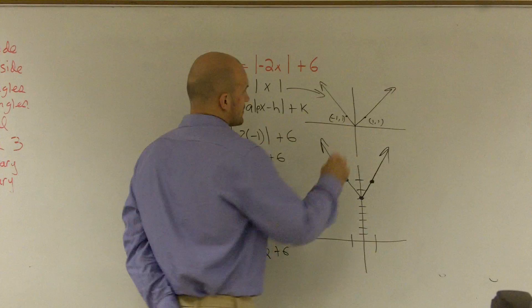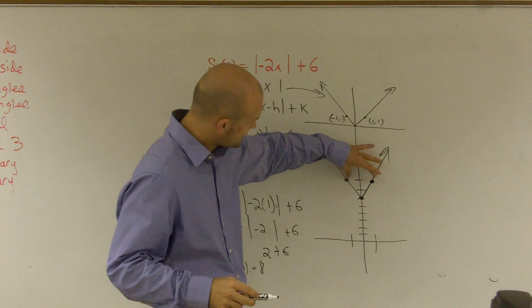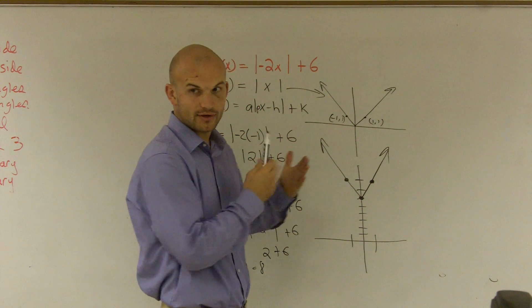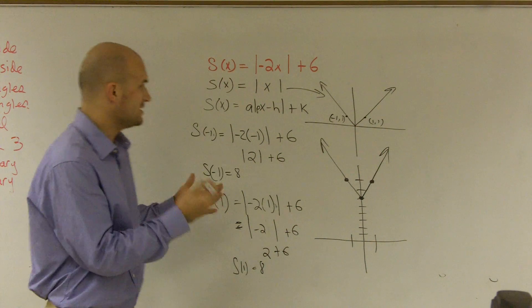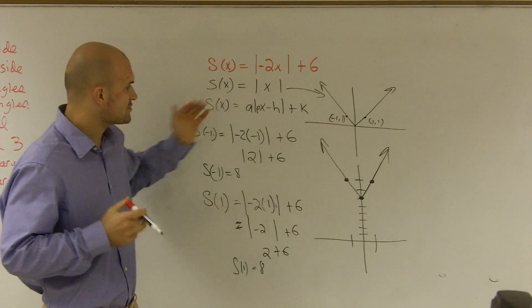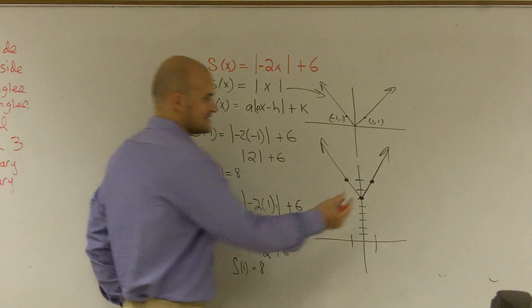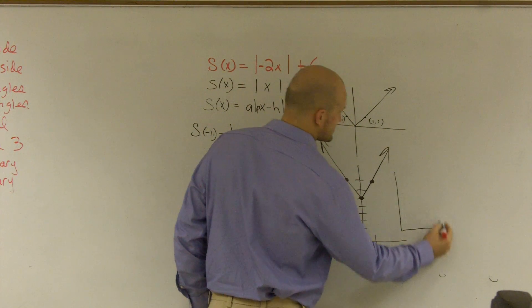So what you can see is that 2 looks like it actually kind of shrinks it in a little bit, or compresses the graph, and it shifts it up 6. Now, if you didn't already notice that, or you don't know your transformations, you could have just also randomly picked these points and made a table.